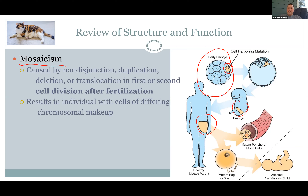It depends on whether those cells involve the sex cells. If they don't, you just die with the change. But if part of that mosaic involves your ovaries or testes, then it will be passed on. You hear about other things like resorbing your twin and chimera people with different DNA — all kinds of cool things like that can happen.